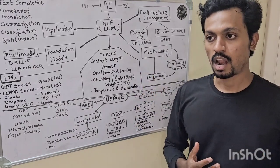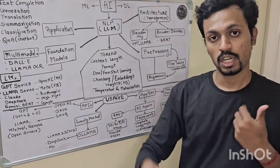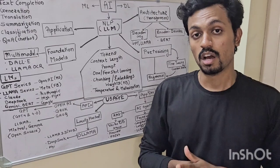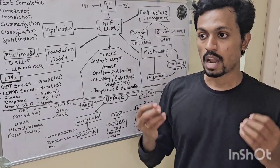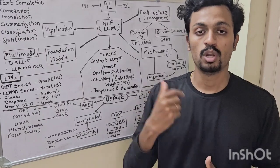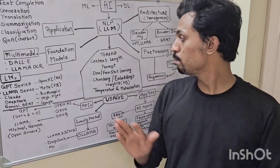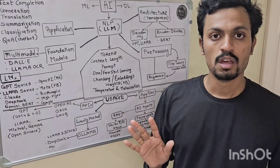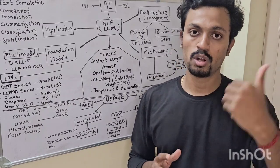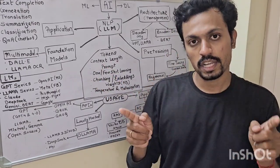RAG stands for Retrieval Augmented Generation. If you have a book and want to ask a question, you can use an LLM to answer it. The problem is that if you have a book with 10,000 to 50,000 words across many chapters, the context length of a model is limited — models may only handle around 1,000 words at a time.